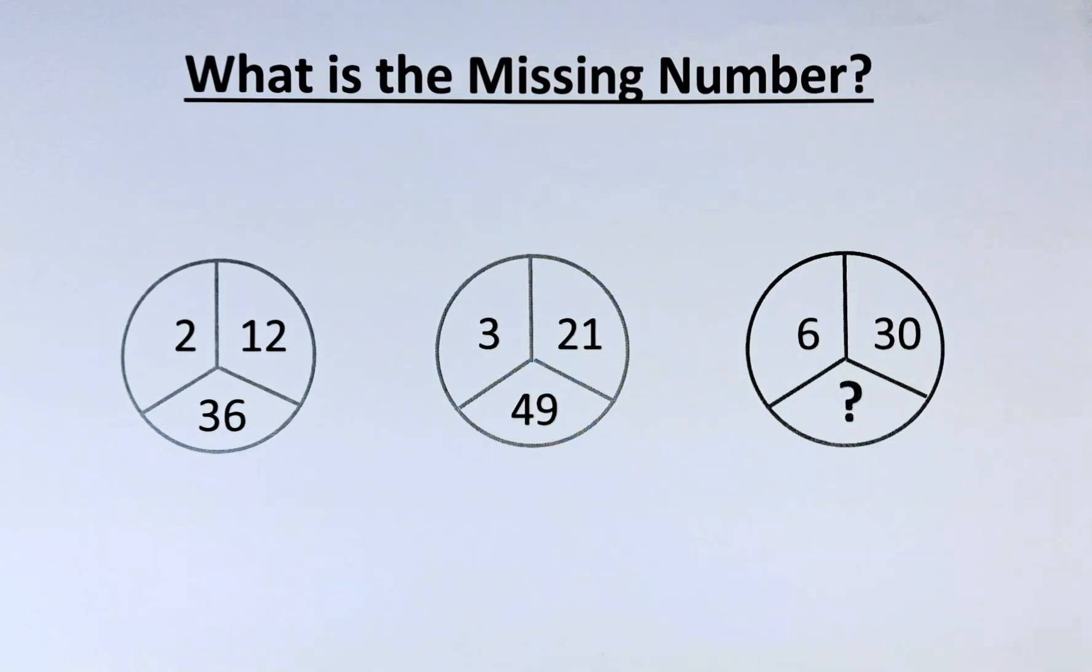If you look at the numbers, it looks like the top 2 numbers will multiply or add to get the bottom number. For example, 2 and 12 will manipulate to get 36. 3 and 21 will get 49. And 6 and 30 to get the question mark. However, this is not true.